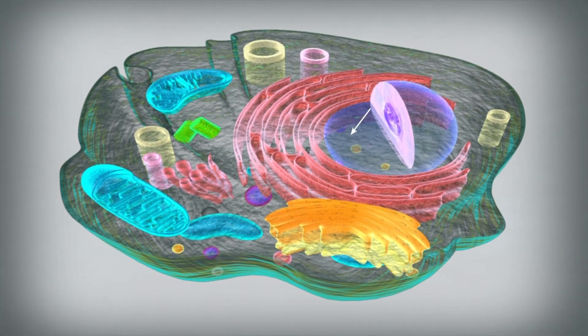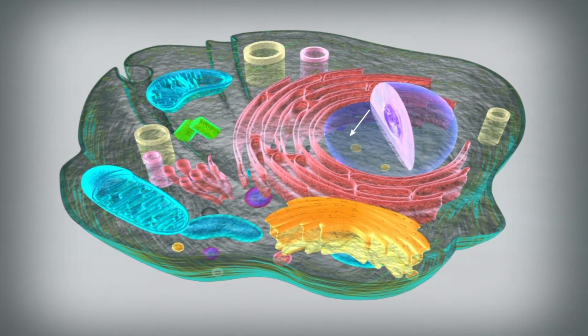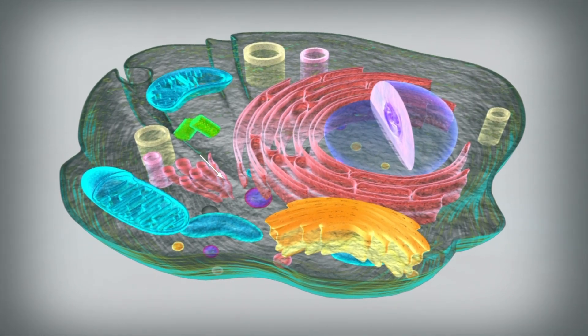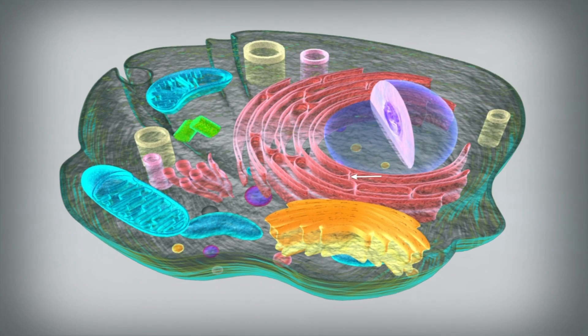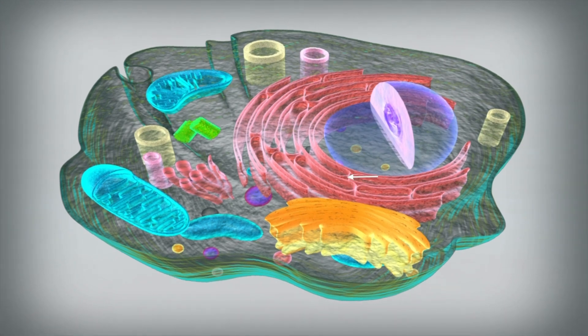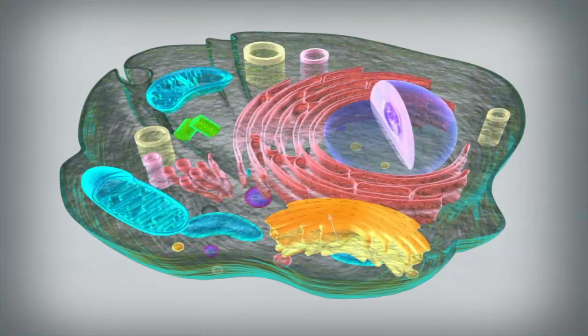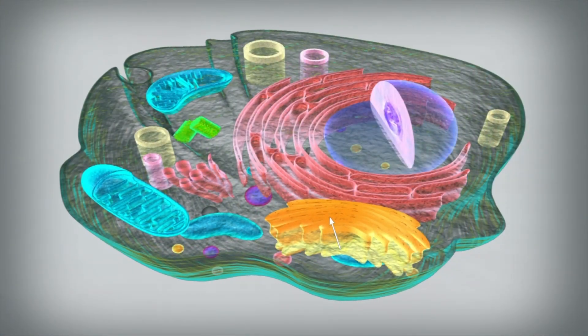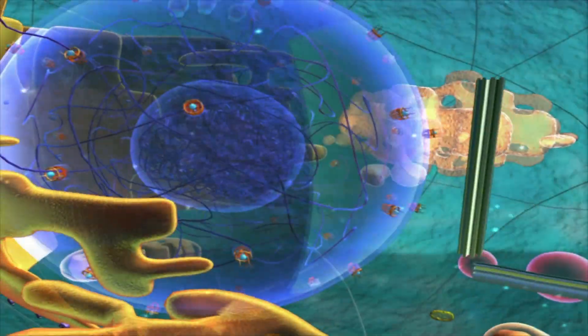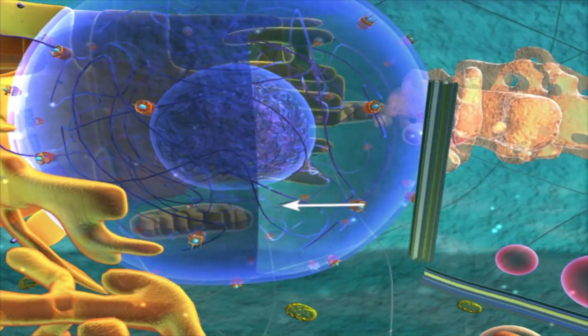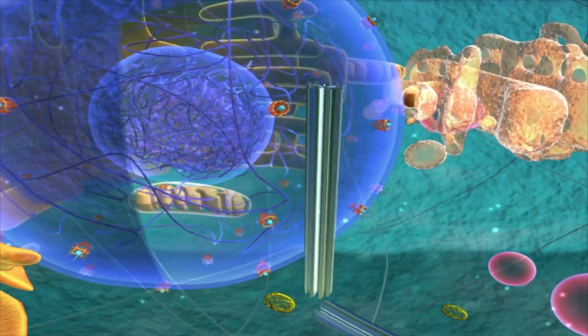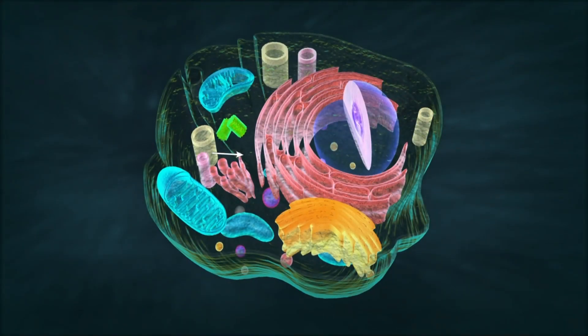The major cell organelles are the nucleus, mitochondria, endoplasmic reticulum, ribosomes, Golgi complex, centrosomes with centrioles, microtubules, and microfilaments.